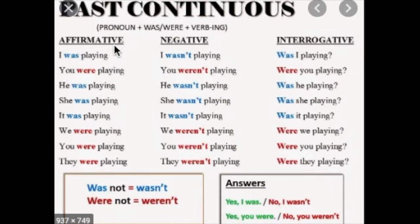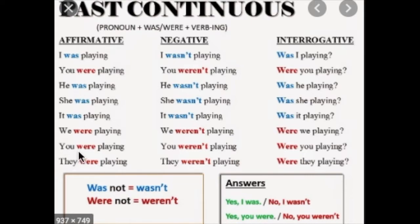As you can see here, you have some examples about affirmative, negative and interrogative. Es la misma oración, solo que está en sus tres formas para que puedan ver la diferencia. Afirmativo: I was playing. Negativo: I wasn't playing. Interrogativo: Was I playing? Y tenemos exactamente el mismo contexto con todos los subject pronouns. Ya saben que el you es tú y ustedes. Nos marca aquí específicamente cuando utilizamos were y cuando utilizamos was, y evidentemente sus formas de negación: weren't y wasn't. Y el auxiliar de pregunta que cambia al inicio de la oración.